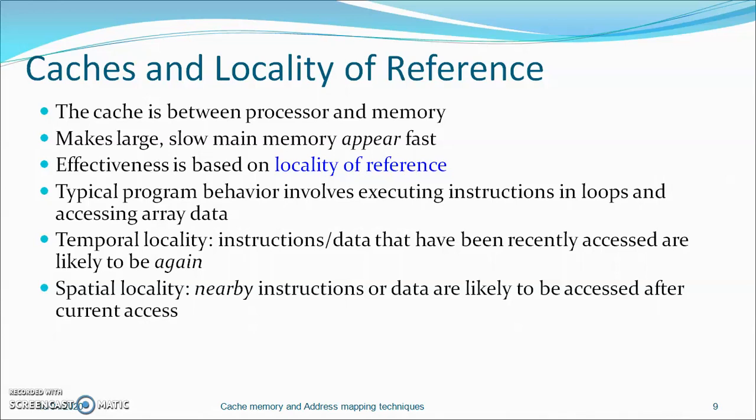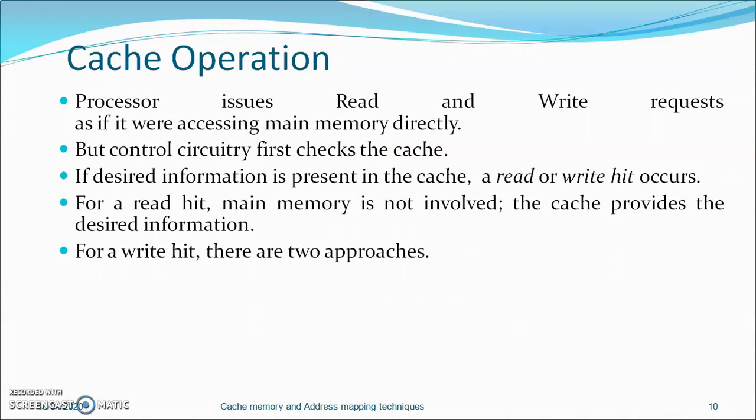Considering caches and locality of reference: the cache is placed between the processor and memory, making large, slow main memory appear fast. Effectiveness is based on a measure called locality of reference, which reflects typical program behavior involving executing instructions in loops and accessing array data. There are two types of locality of reference: temporal locality — instructions or data recently accessed are likely to be accessed again — and spatial locality — nearby instructions or data are likely to be accessed after the current access.